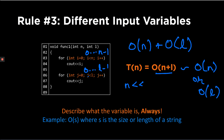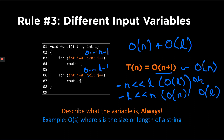unless relationships are explicitly given between n and l. For example, if n is much less than l, then l would be the dominating term and this could be simplified to O(l). If the relationship was the other way, it could be simplified to O(n). But if nothing is given in the question, you cannot simplify this term.